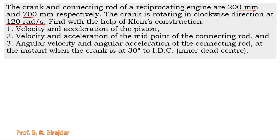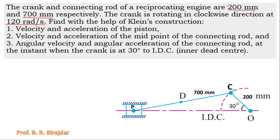We also need to find the velocity and acceleration of the midpoint D of the connecting rod, and the angular velocity and angular acceleration of the connecting rod, at the instant when the crank is at 30 degrees to the inner dead center. OC is the crank, CP is the connecting rod, and P is the piston.